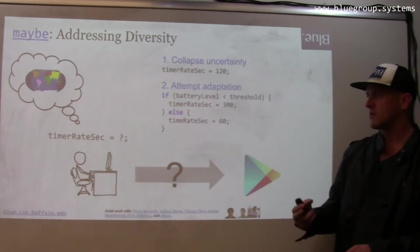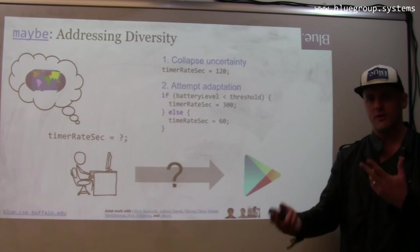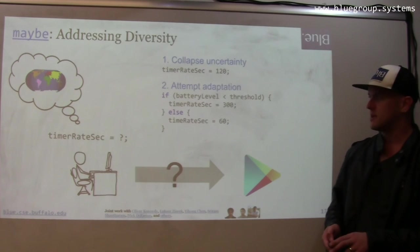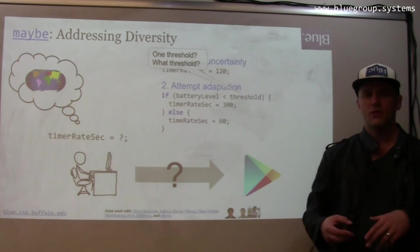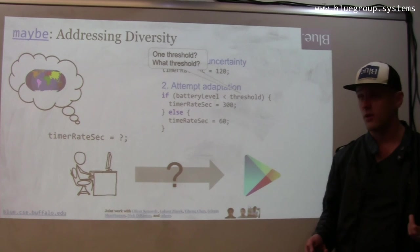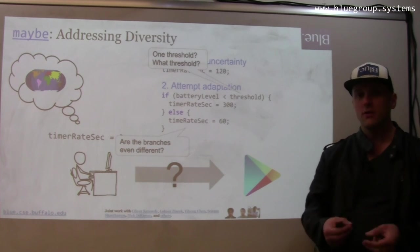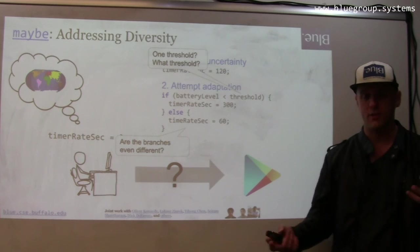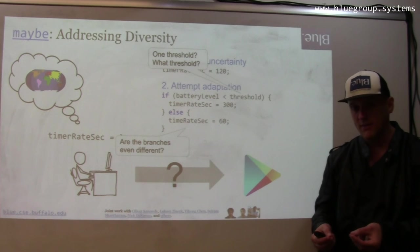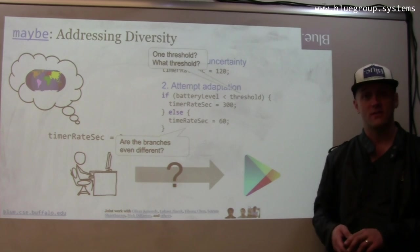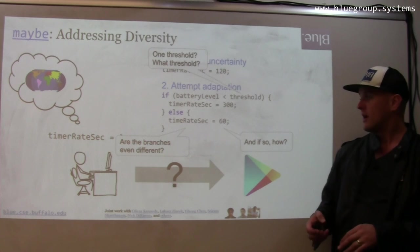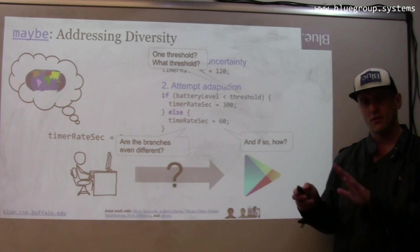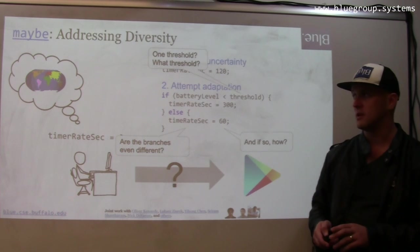For example: if the battery is low, slow down the timer; otherwise run it at a faster rate. But this type of adaptation done at development time is very challenging. What threshold are you going to choose? Is one threshold appropriate for all devices? How much effect on energy does the timer firing even have? It may have a big effect if I'm on a slow network connection and a very small effect on a fast connection. And if the branches are different, how much of a difference is there? That difference may vary over time. So this sort of development-time adaptation is very challenging.